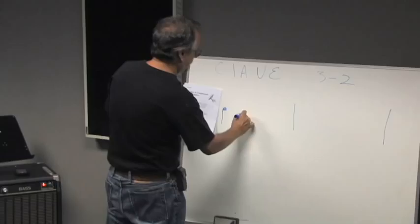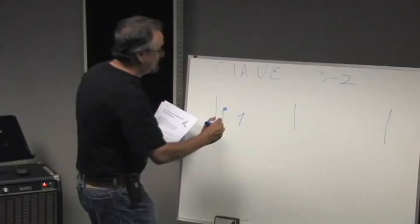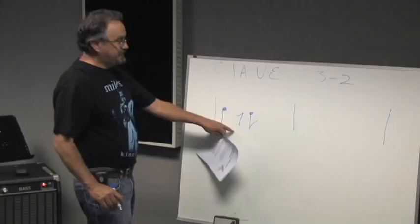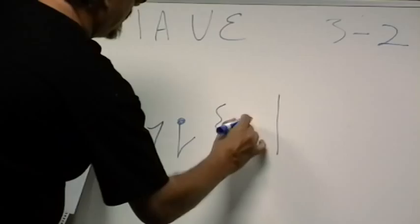And the way that this works is in 3-2 clave, on the one beat, there's going to be a pulse. You're going to feel that. You're going to take a rest, an eighth note rest. So it's going to be 1-and-2. And then you're going to play an eighth note. So 1-and-2-and.